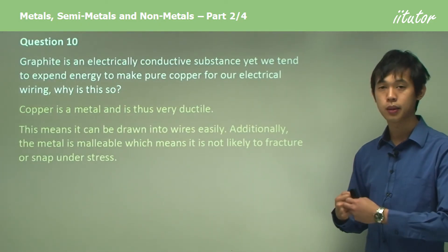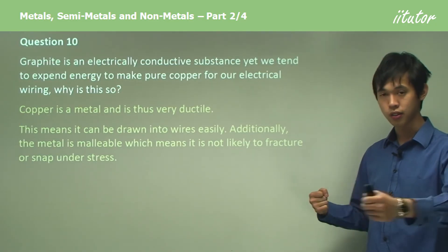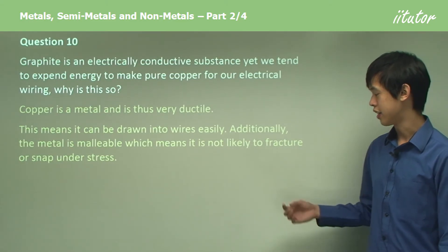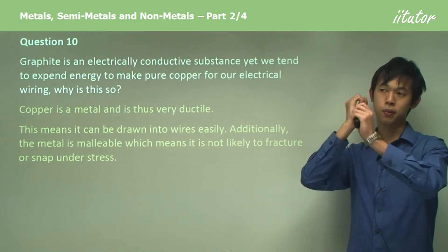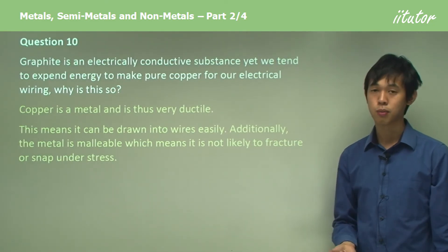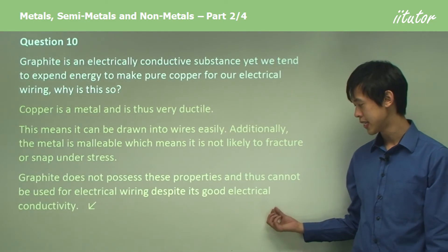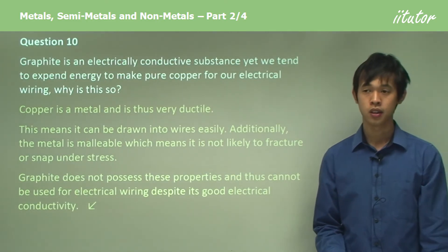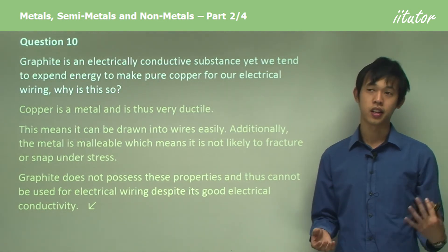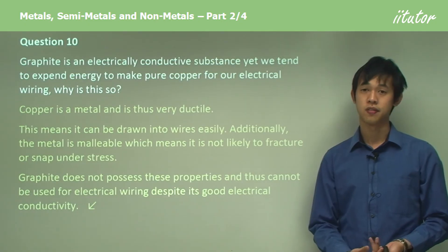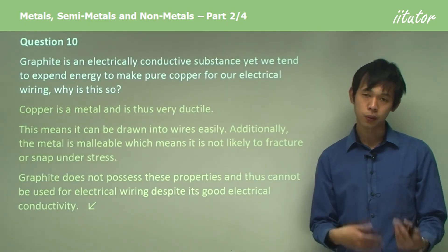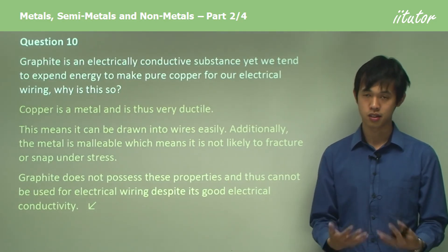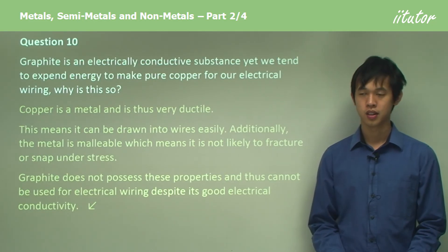The reason is that copper is a metal and it's very ductile — ductility measures how easy it is to stretch a material into a wire. Additionally, the metal is malleable, which means it's not likely to fracture or snap under stress. A carbon wire might snap if a bird sat on it. Graphite does not possess these properties and thus can't be used for electrical wiring despite its good electrical conductivity. This is the work of a material scientist: to determine what material is best for a particular application.